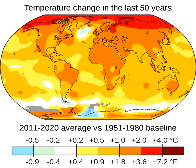On the timescale of centuries to millennia, the magnitude of climate change will be determined primarily by anthropogenic CO2 emissions, due to CO2's long atmospheric lifetime. Oceanic CO2 uptake is slow enough that ocean acidification will continue for hundreds to thousands of years. These emissions are estimated to have prolonged the current interglacial period by at least 100,000 years. Sea level rise will continue over many centuries, with an estimated rise of 2.3 metres per degree Celsius (4.2 feet per degree Fahrenheit) after 2,000 years.